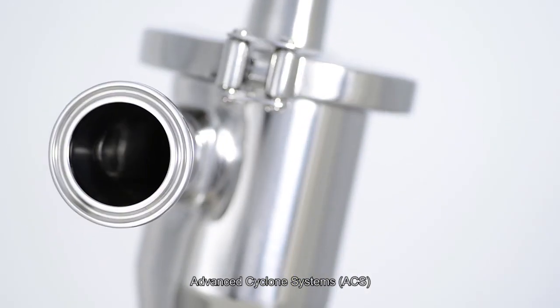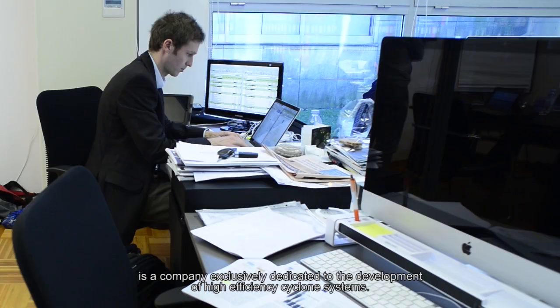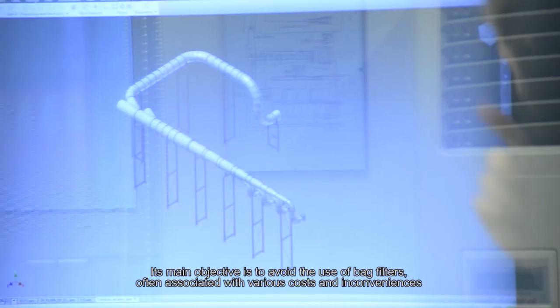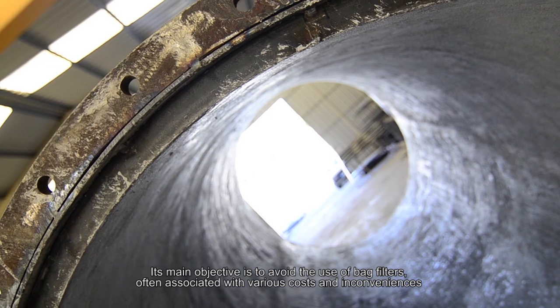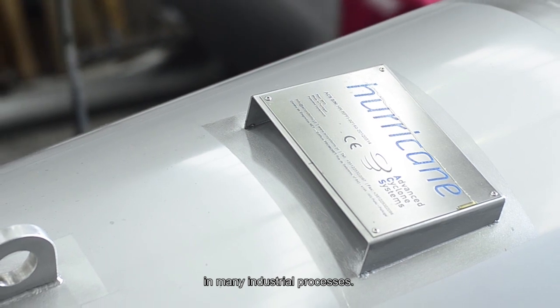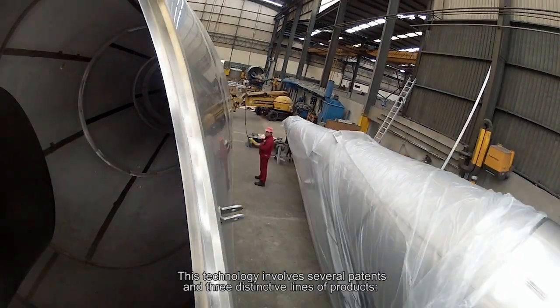Advanced Cyclone Systems, or ACS, is a company exclusively dedicated to the development of high efficiency cyclone systems. Its main objective is to avoid the use of bag filters, often associated with various costs and inconveniences in many industrial processes. This technology involves several patents and three distinctive lines of products.